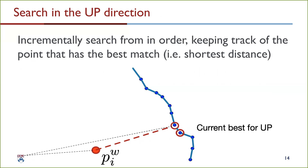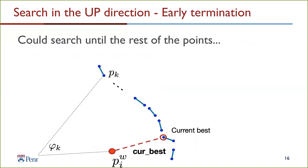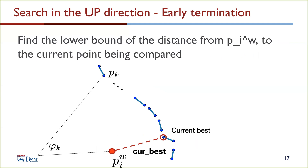The current best in the up direction is maintained as you search in that direction. This search could continue until you reach the end of the sequence of scan points, but that would be very inefficient. Instead, we determine a lower bound on the distance from p_i^w to the current point being compared. If the distance to the current point being compared is greater than this lower bound, we terminate the search and return the current best candidate as the correspondence.